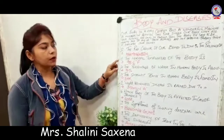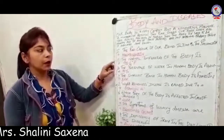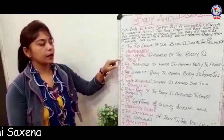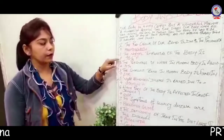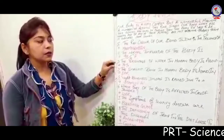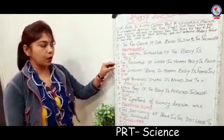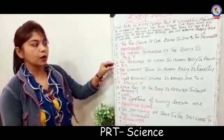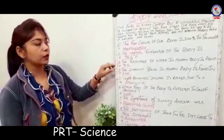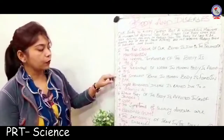Second one: the normal temperature of the body is 98.6 degree F. Third one: the percentage of water in the human body is about 70%.